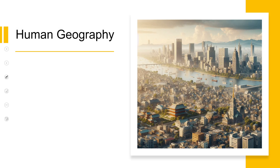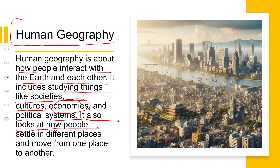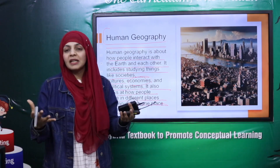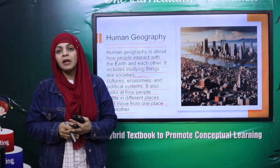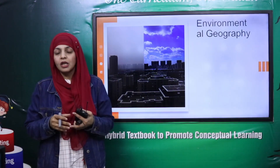The next type is Human Geography. As you can see in the picture, Human Geography is about how people interact with the Earth and with each other — how human beings interact with the Earth's landforms and with one another. It includes the study of societies, cultures, economies, and political systems. It also looks at how people settle in different places and move from one place to another, and why — all of this is studied in Human Geography.